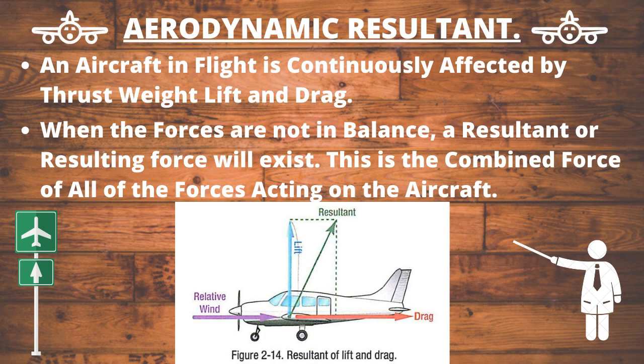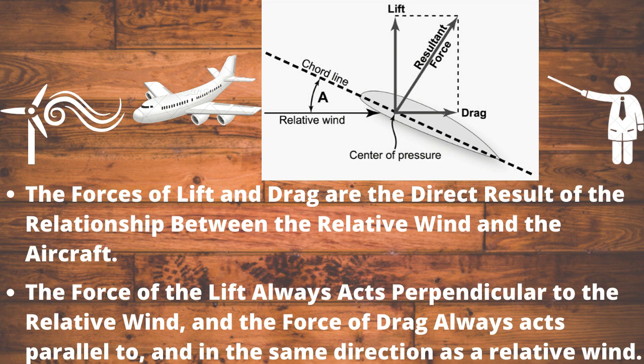Aerodynamic resultant. An aircraft in flight is continuously affected by thrust, weight, lift, and drag. When the forces are not in balance, a resultant force will exist — the combined force of all forces acting on the aircraft. The forces of lift and drag are the direct result of the relationship between the relative wind and the aircraft. Lift always acts perpendicular to the relative wind, and drag always acts parallel to and in the same direction as the relative wind.